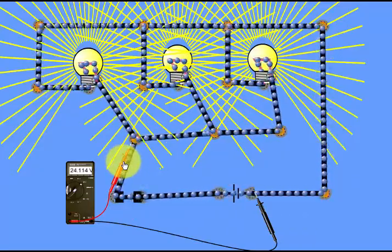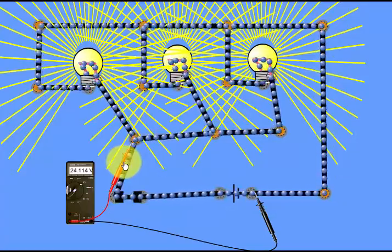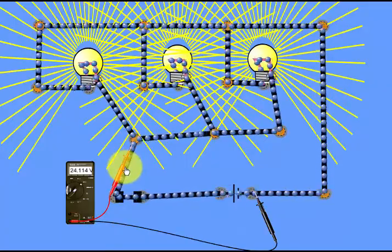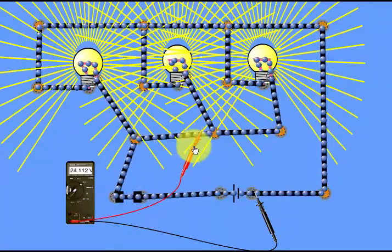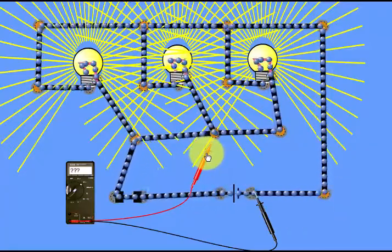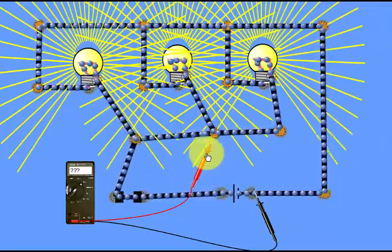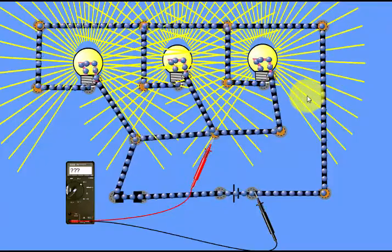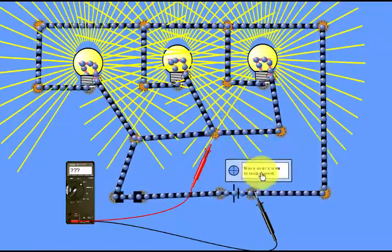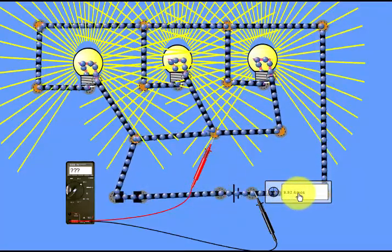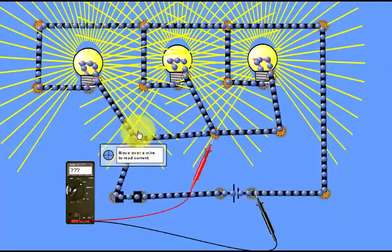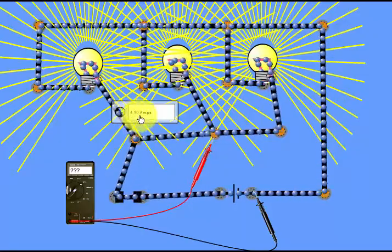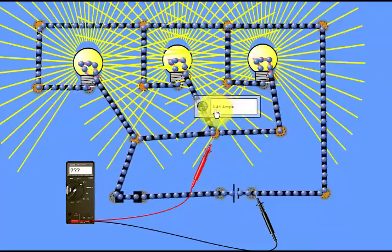The voltage drop is just a little bit coming from the conductor resistance. The next step is to check the current in this circuit. I have a clamp meter, a non-contact meter, which is a tool. When I move it over each wire in this circuit it will show the current in every branch. This wire shows it is taking 9.92 amperes. This light is getting 4.10 amperes.